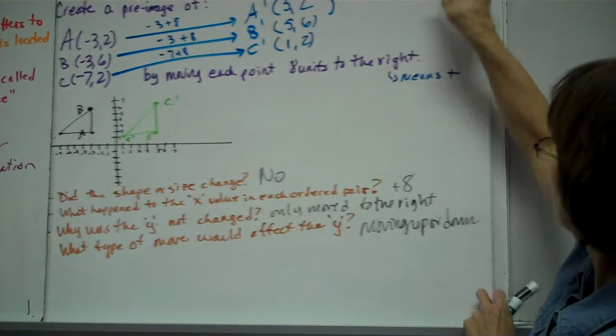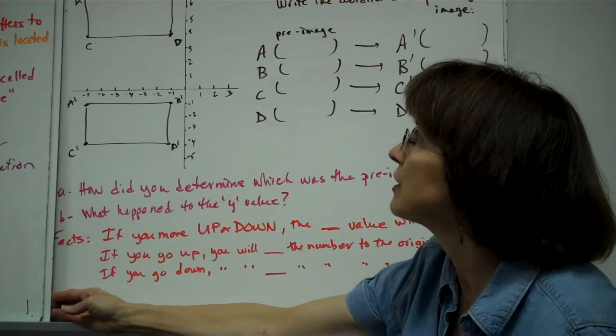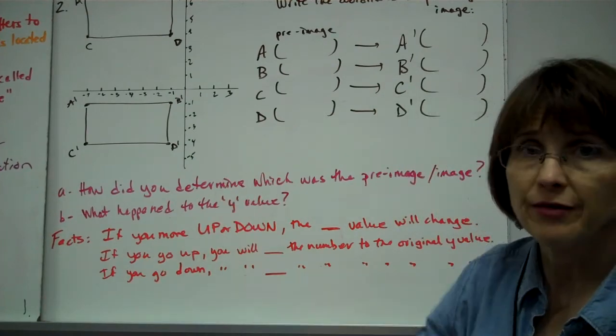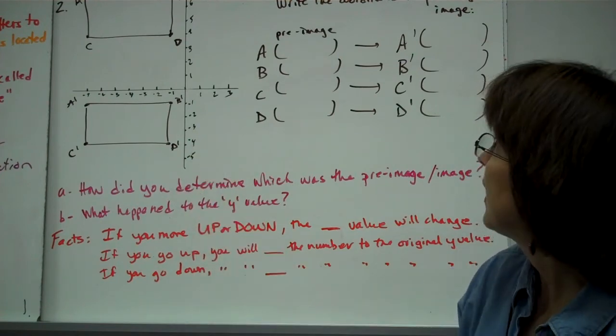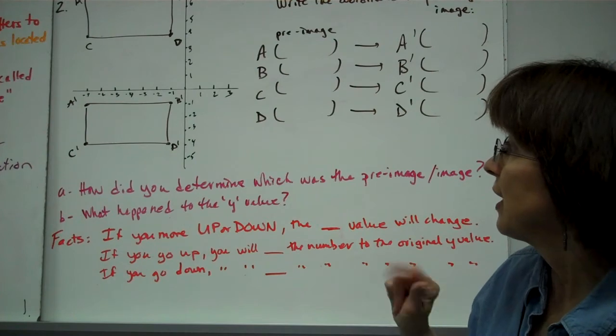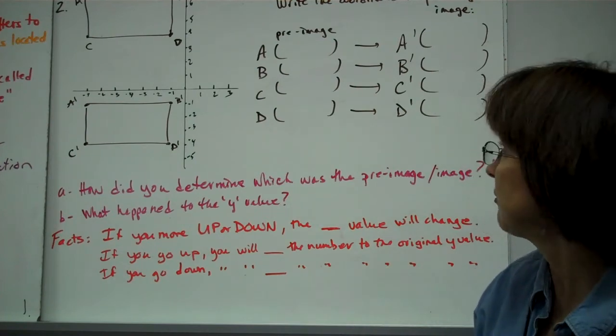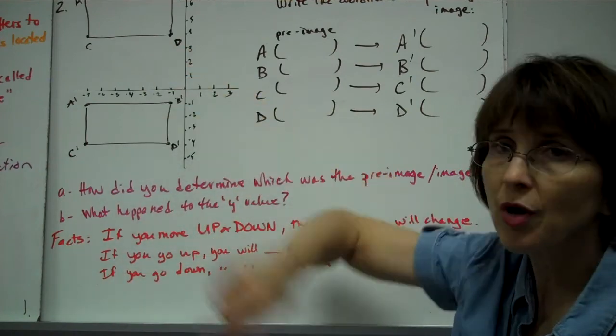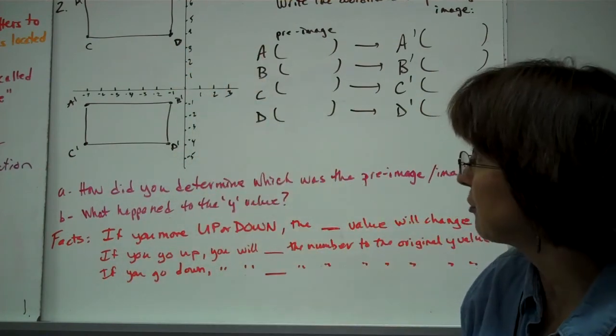Let's talk about some other things. Supposing for the next example, I give you the graph of two shapes. You're supposed to write the coordinates for the preimage and the image. So we have to first decide which one's a preimage. How do you decide? Whichever one doesn't have the prime. The preimage is the one with just the letters, just the capital letters.